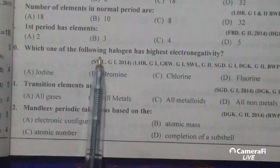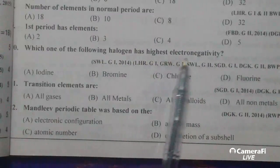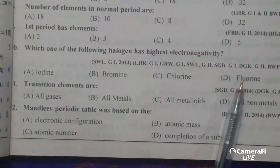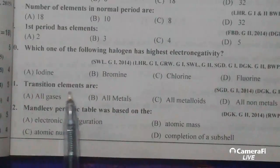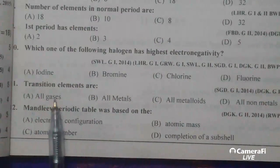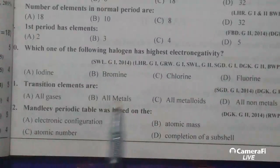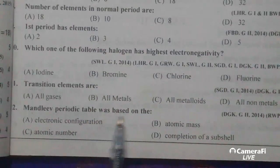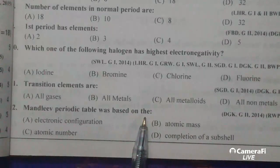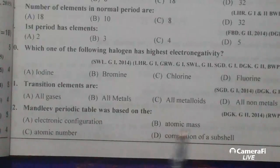Which one of the following halogens has highest electronegativity? Fluorine. Transition elements are all metals. Mendeleev's periodic table was based on atomic mass.